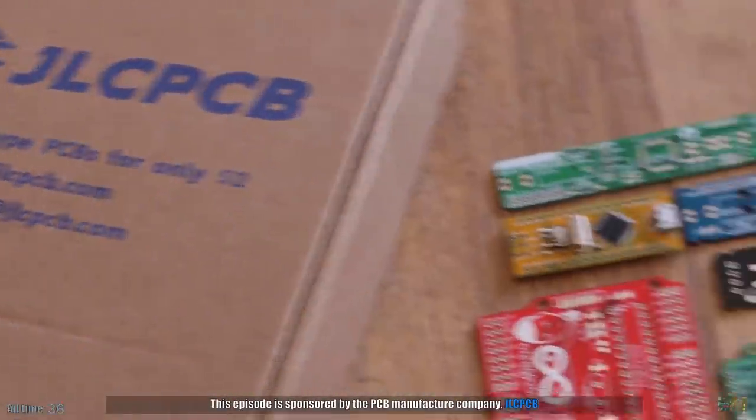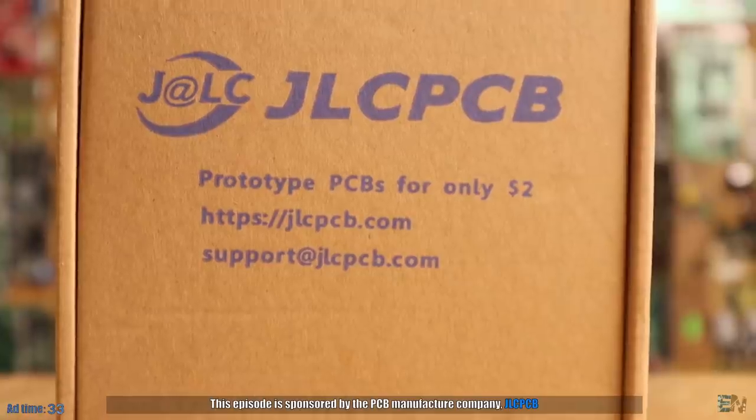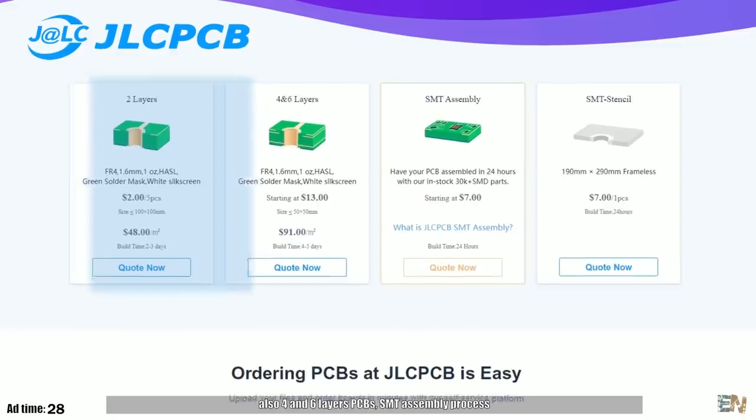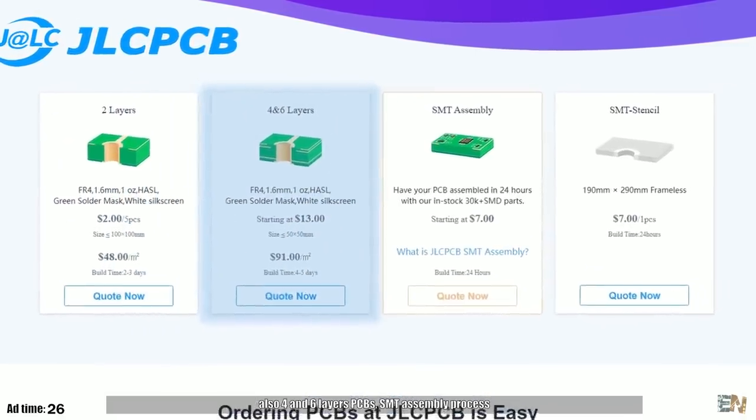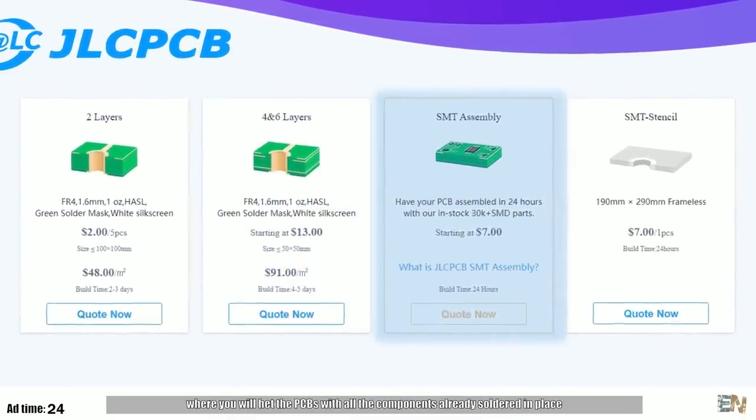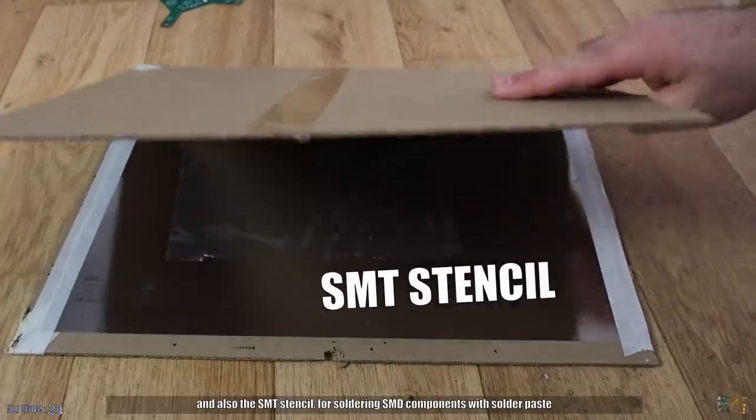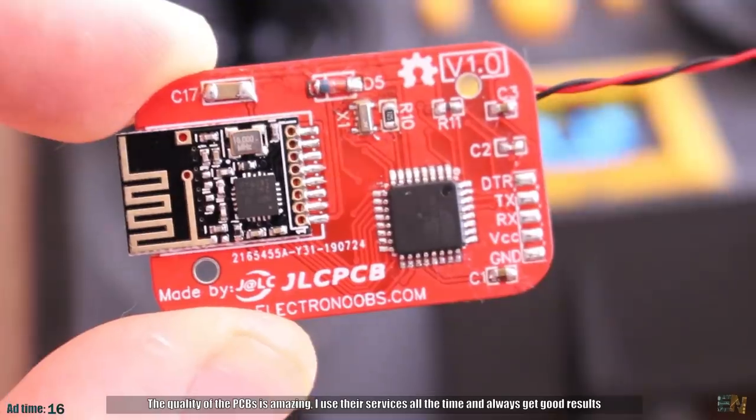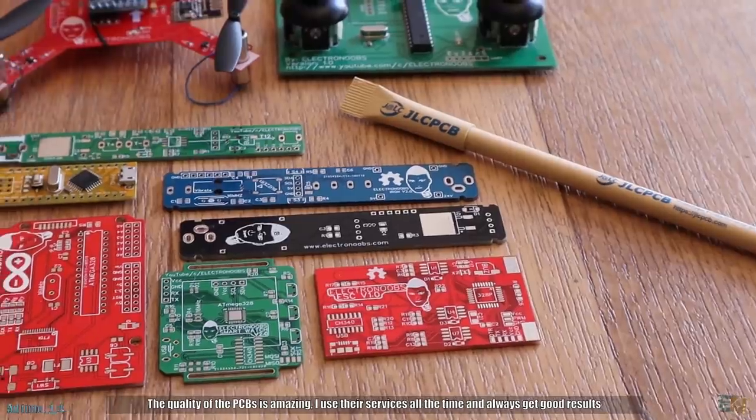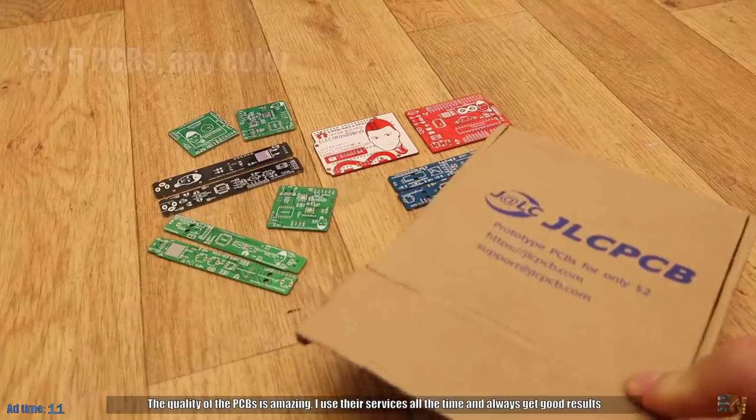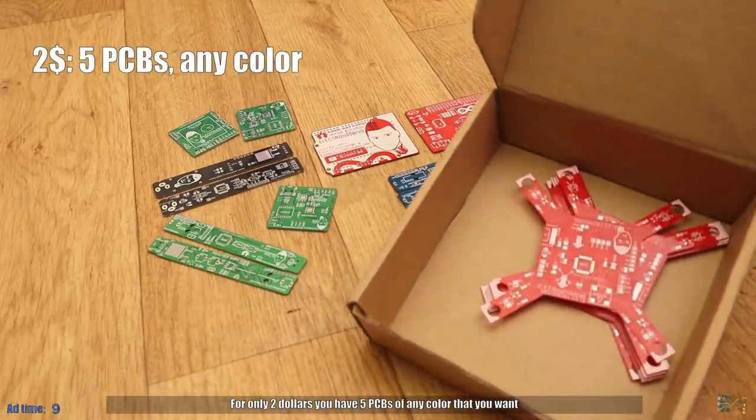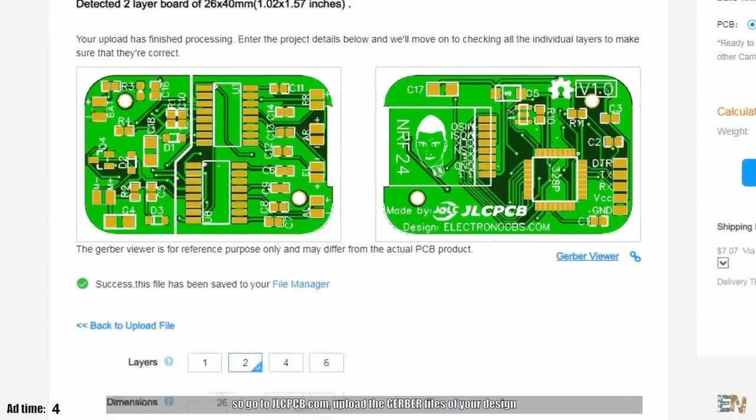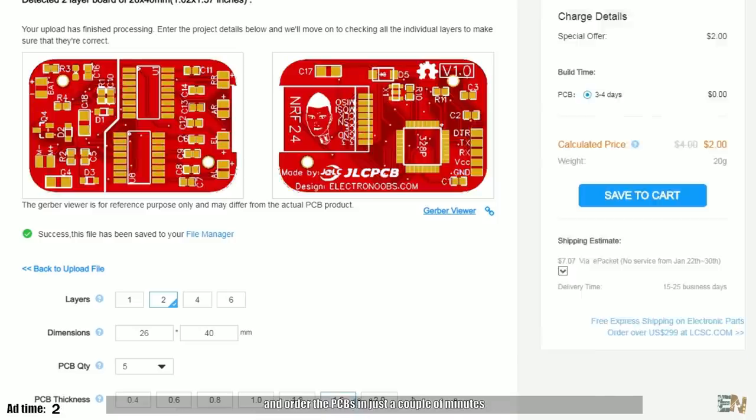This episode is sponsored by the PCB manufacturer company JLCPCB. Their main services are the 2 layer PCBs for only $2. Also 4 and 6 layer PCBs, the SMT assembly process where you will get the PCBs with all the components already soldered in place and also the SMT stencil for soldering SMT components with solder paste. The quality of the PCBs is amazing. I use their services all the time and always get good results. For only $2 you have 5 PCBs of any color that you want. So go to jlcpcb.com, upload the gerber files of your design and order the PCBs in just a couple of minutes.